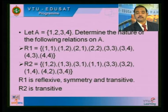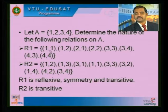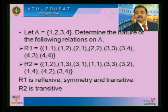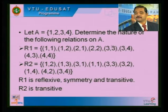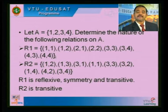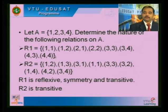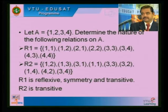R1 is reflexive, symmetric, and transitive. Now for R2: (1,1) is there, (2,2) is not there, (3,3) occurs, (4,4) does not occur. So only (1,1) and (3,3) are present among the diagonal elements — (2,2) and (4,4) are not there. Therefore R2 is not reflexive. For symmetry: (1,2) and (2,1) — not there; (1,3) and (3,1) are there, but (3,2) and (2,3) are not there. Therefore not symmetric. But R2 is transitive: checking all pairs within the relation, transitivity exists.